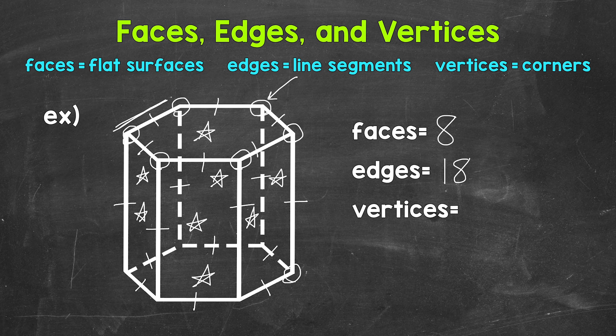Now let's go around the bottom. Seven, eight, nine, 10, 11, 12. So 12 total vertices. So there you have it. A hexagonal prism has eight faces, 18 edges, and 12 vertices.